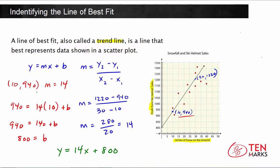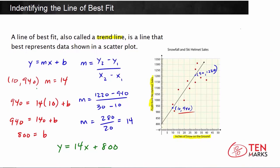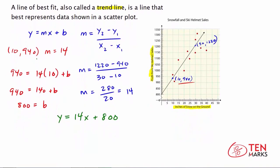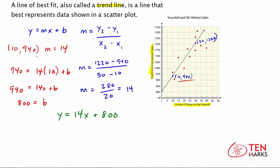So now let's use this trend line that we've found the equation for to make a prediction about the future. What do I mean make a prediction? Notice that the inches of snowfall only goes up to 50. So what if I wanted to know, what would the profit from ski helmet sales be if there were 60 inches of snowfall?